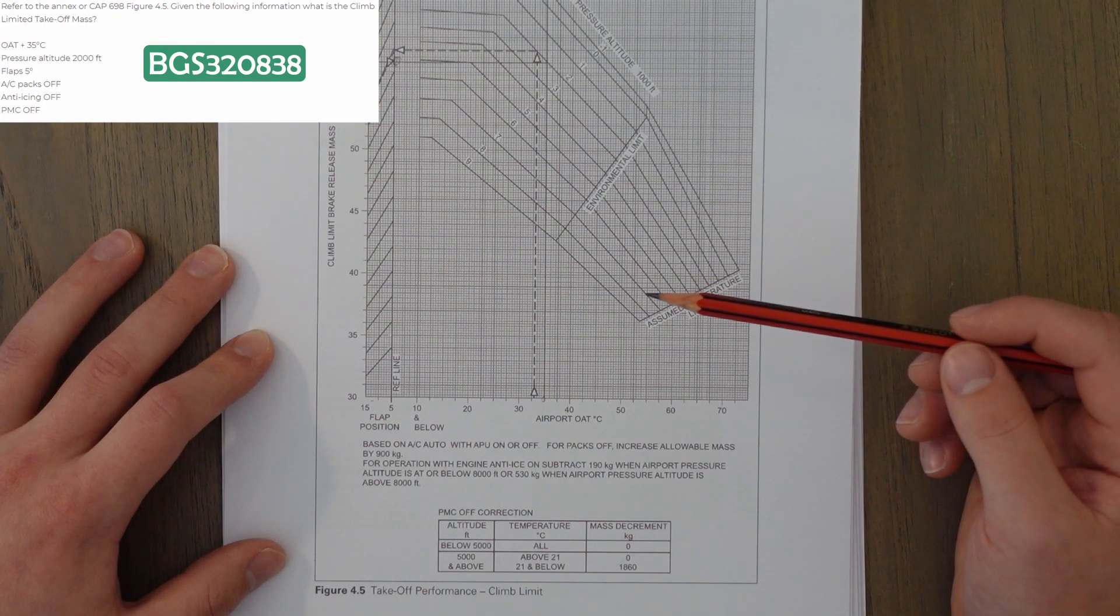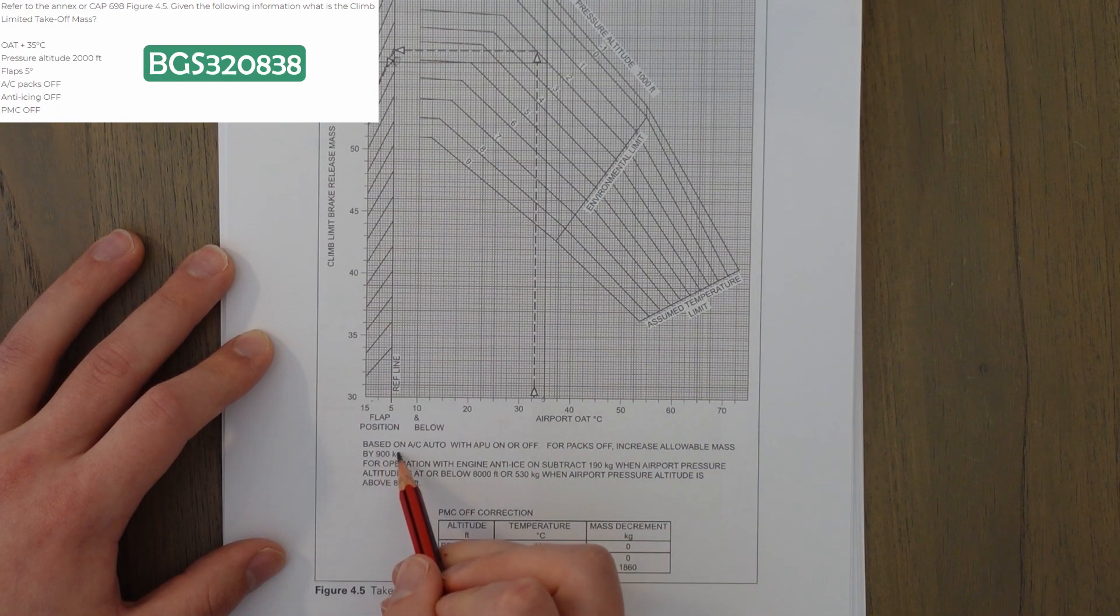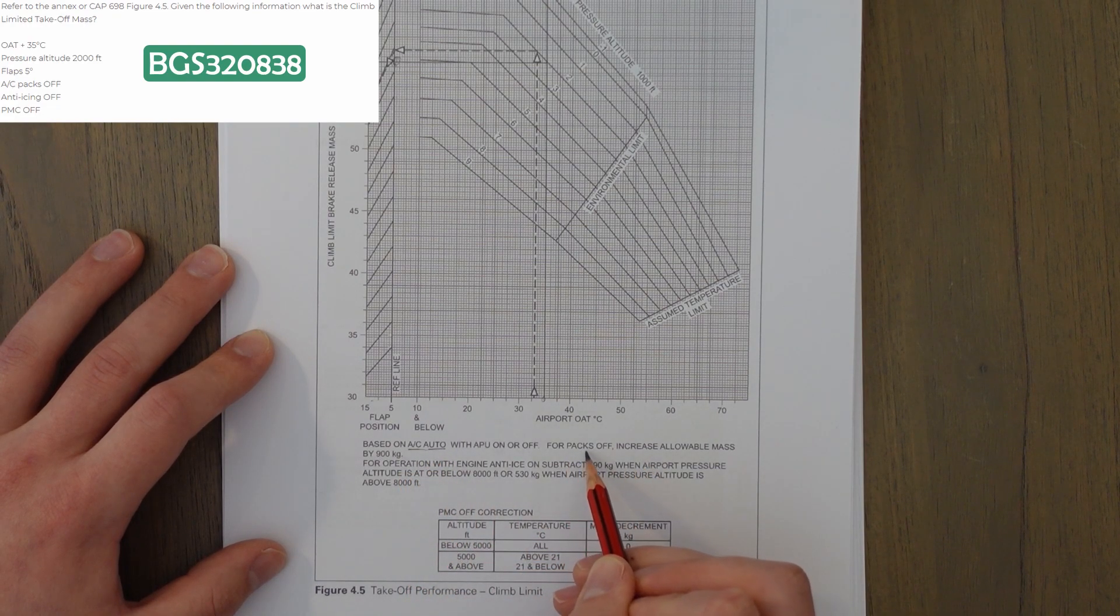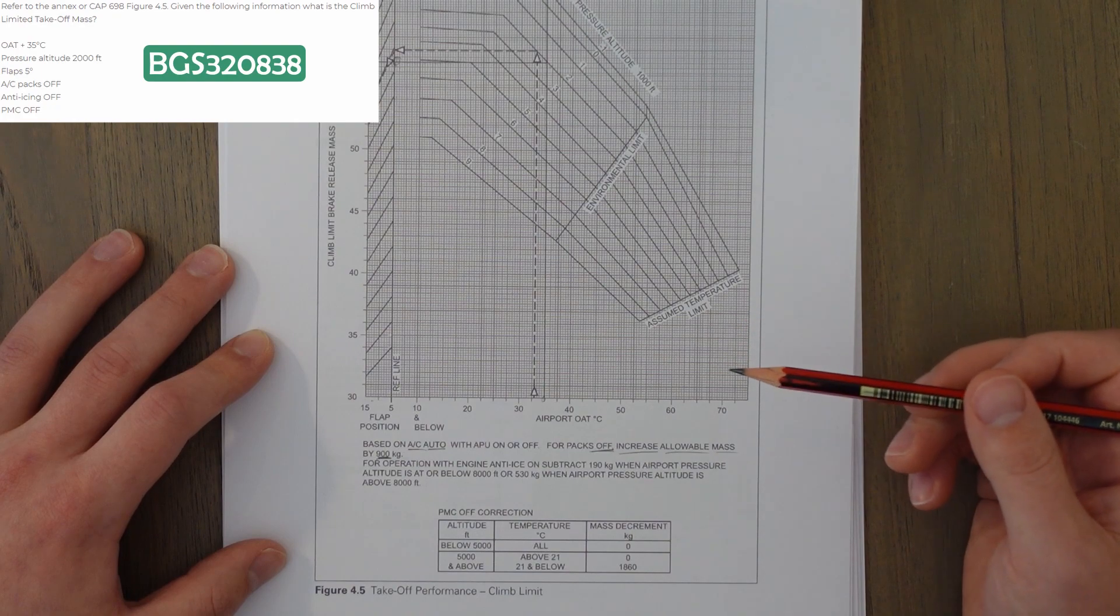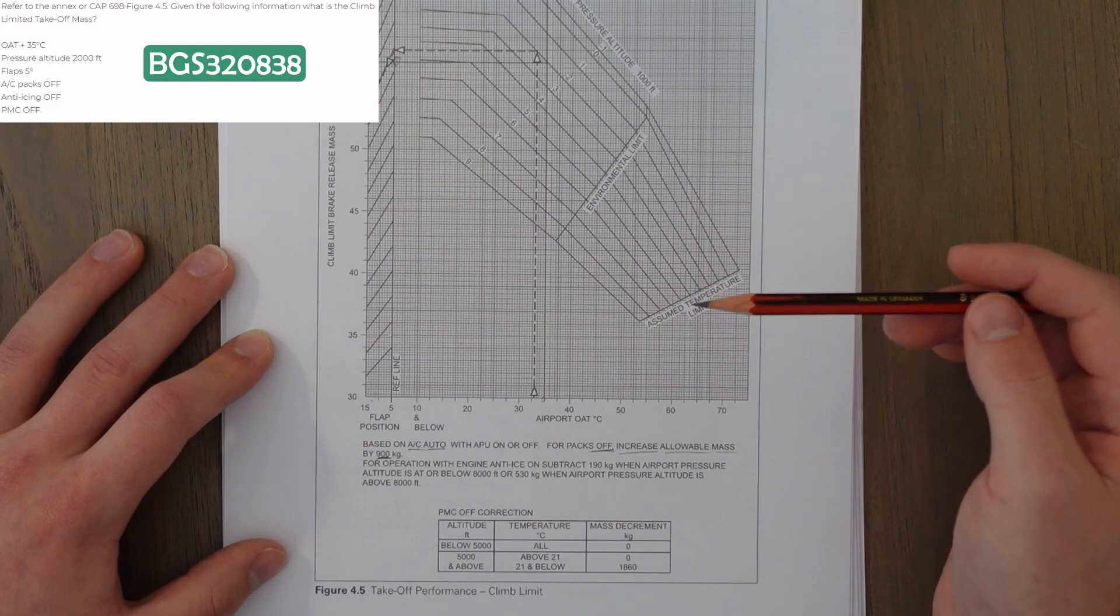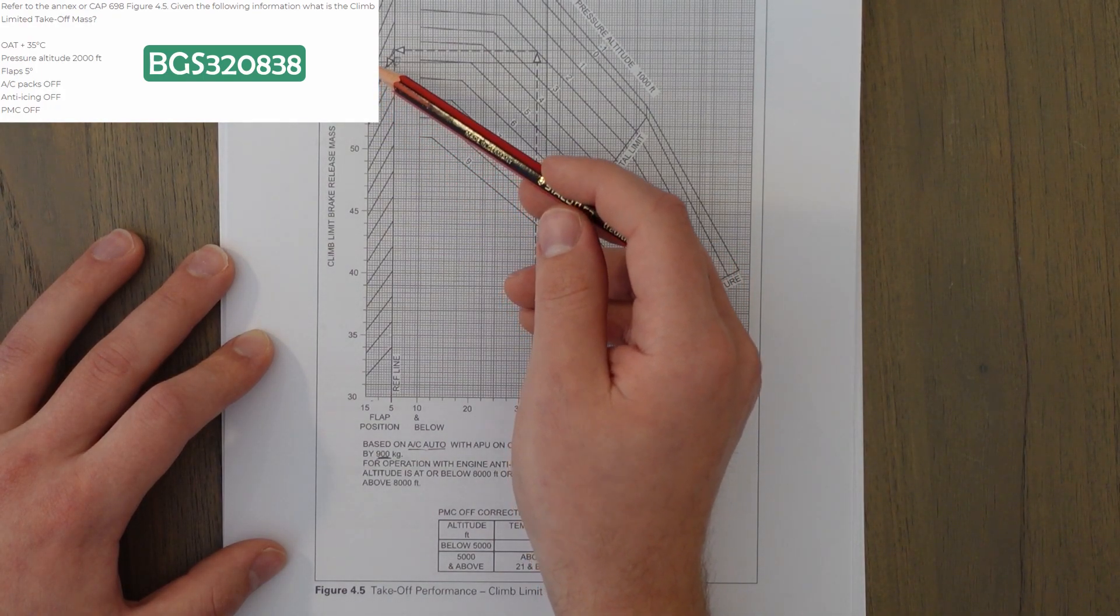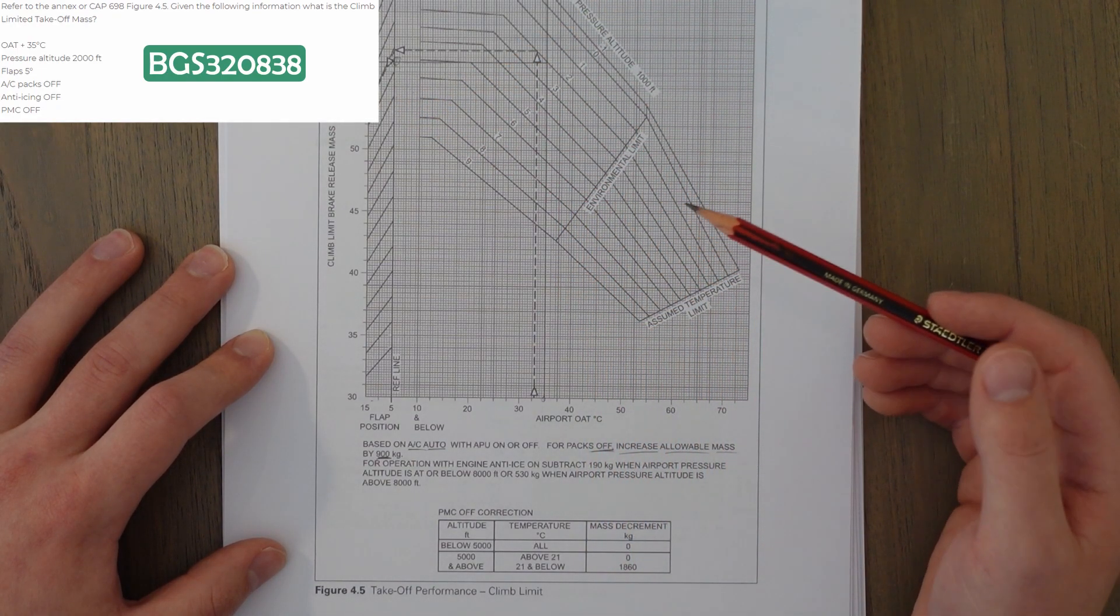In our question, we have the aircraft packs off. So, this is based on aircraft air conditioning packs in the auto position. For packs off, we increase the allowable mass by 900 kilograms. So, in our case, with the air conditioning packs off, we have to increase our answer from 57,000 to 57,900 kilograms if the anti-ice is off.